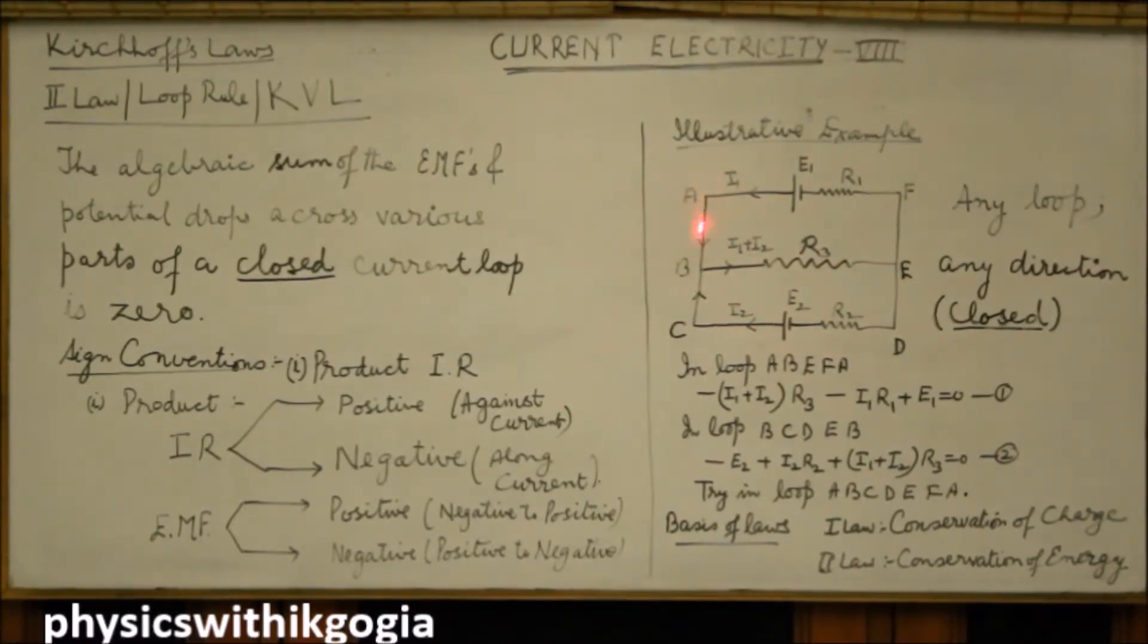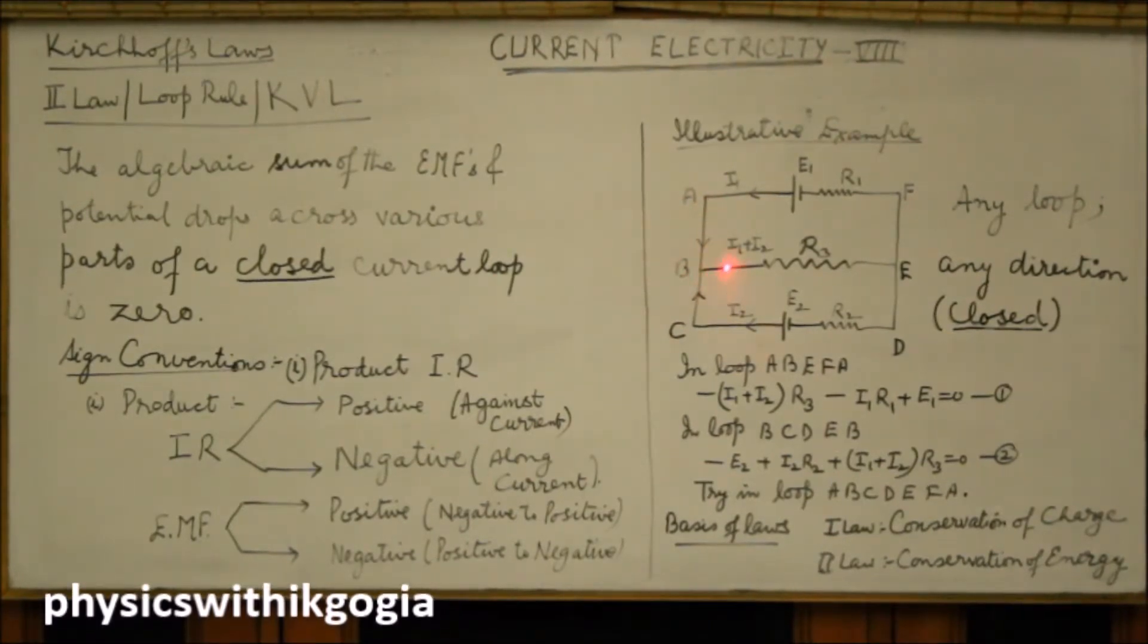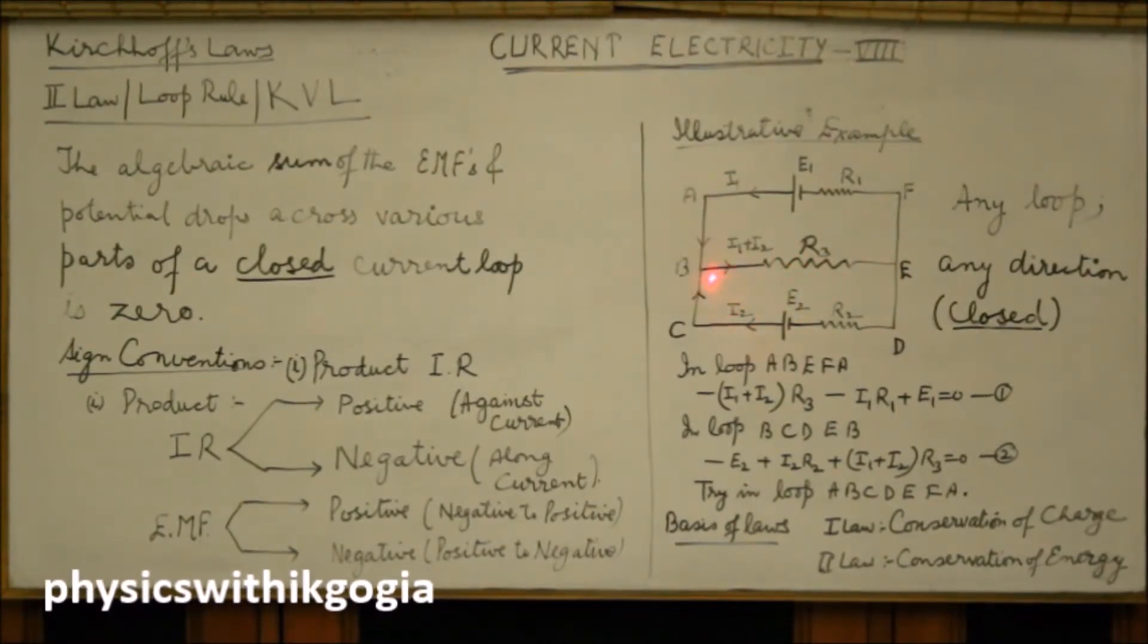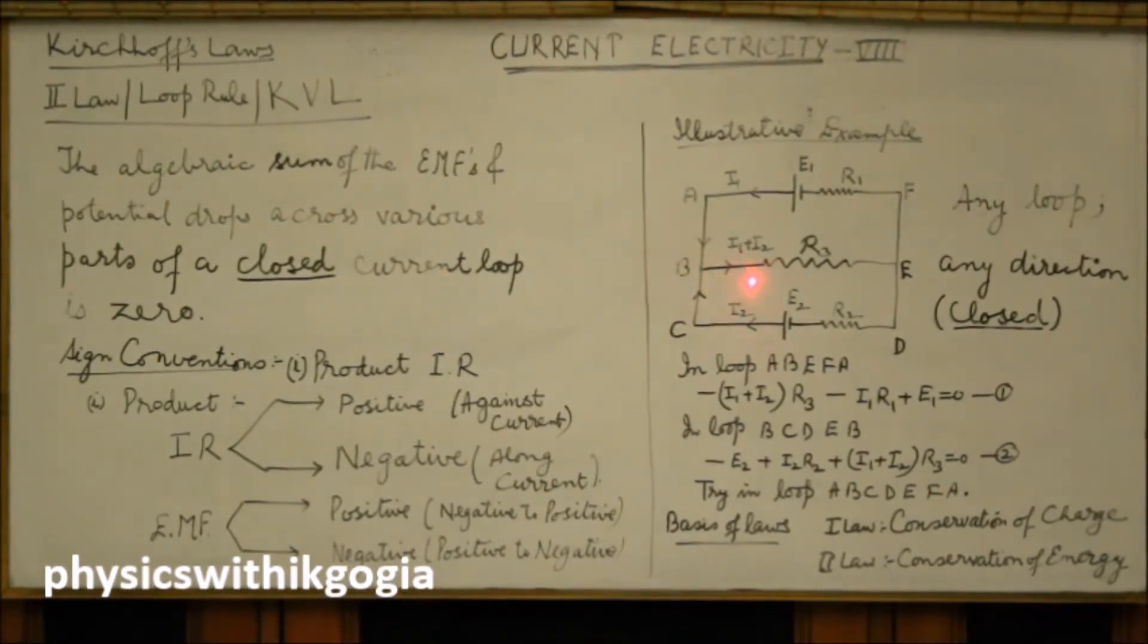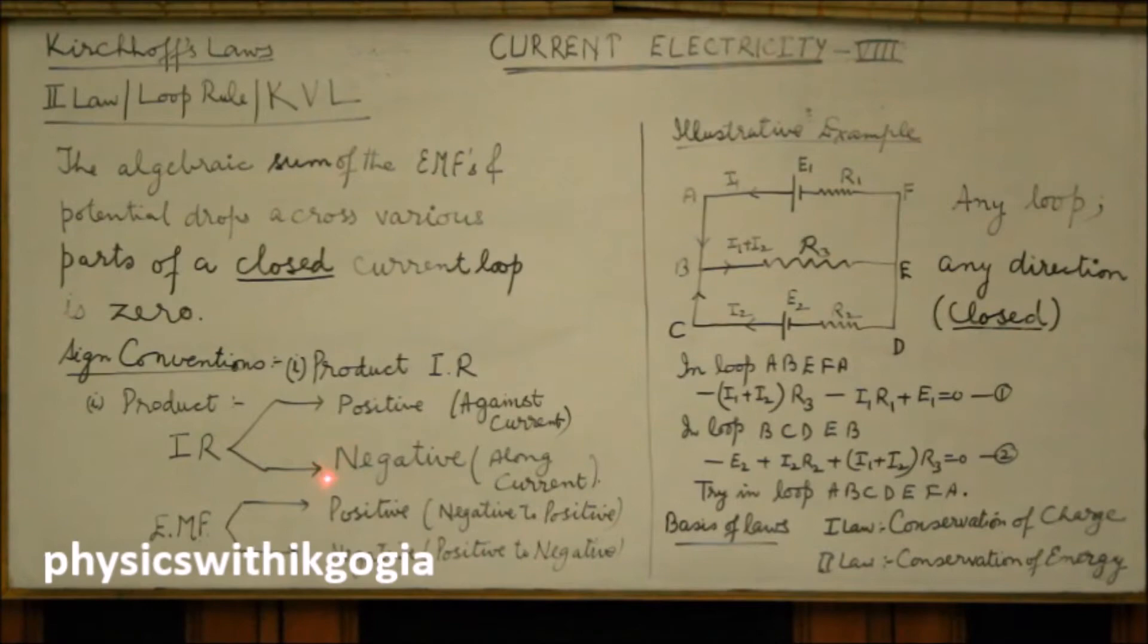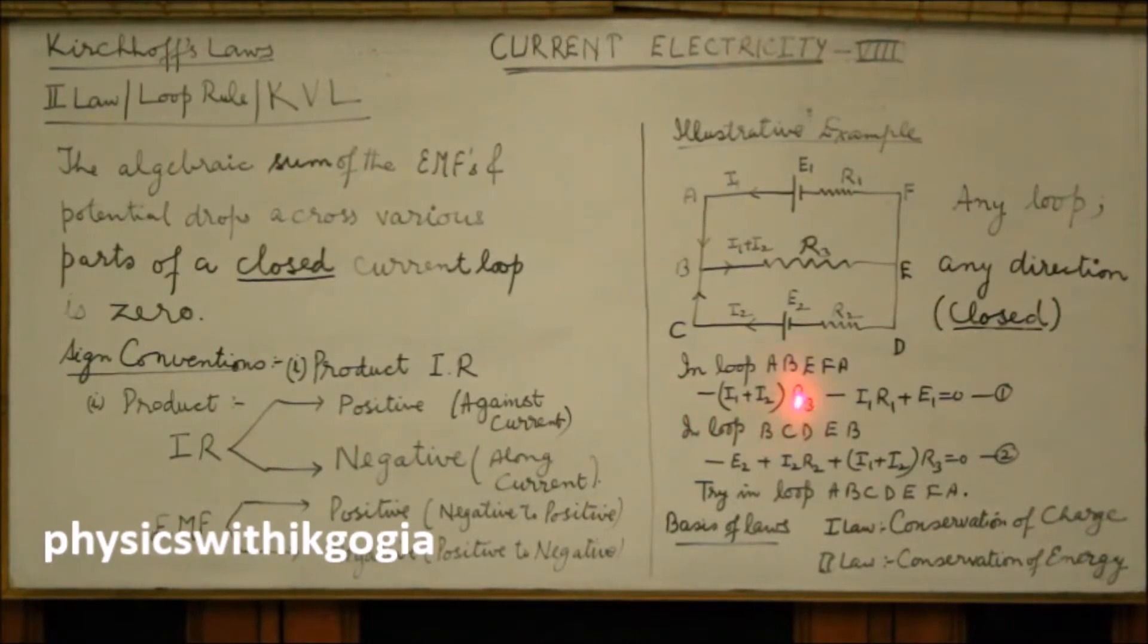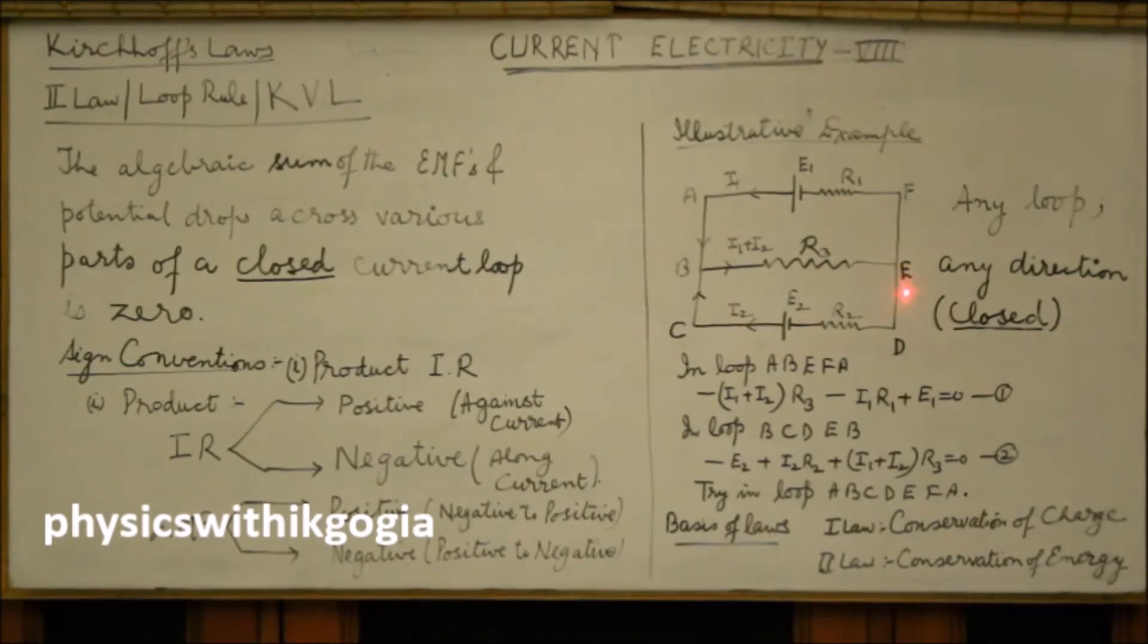In loop ABEFA, when we move along AB, there is no resistance here, so IR product is zero. In the part BE, the resistance is R3 and the current is I1 plus I2. And we are moving along the direction of current. Along the current, according to the sign convention, IR product is negative. So you get minus current I1 plus I2 into resistance R3 for this part.